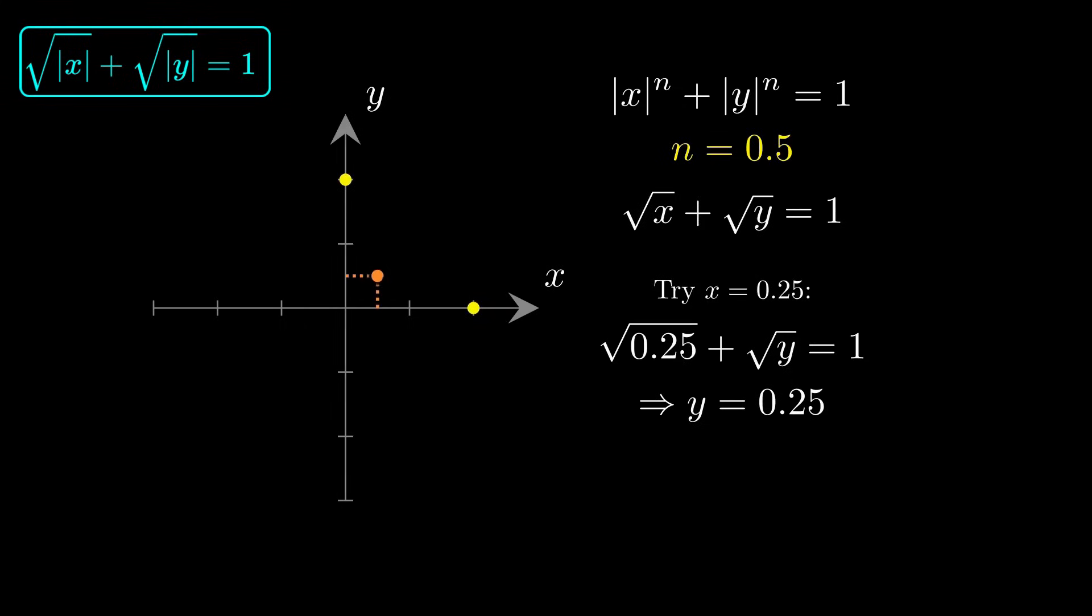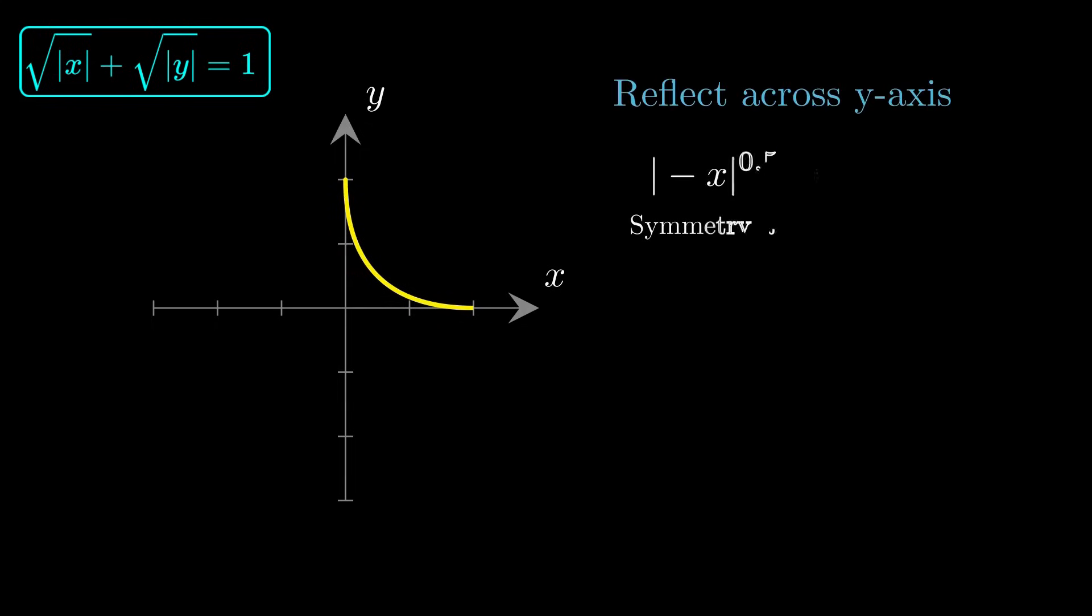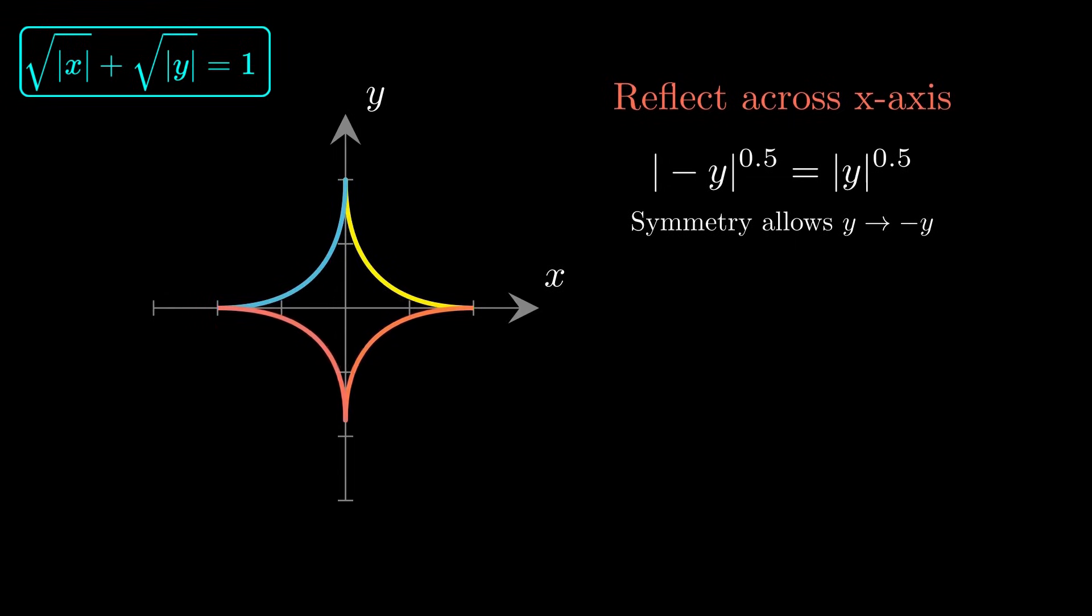Because the exponent is less than 1, the curve bends inward, forming concave edges and sharp tips. Reflect it across the y-axis. Nothing changes, because the absolute value of negative x is the same as positive x. Now reflect it across the x-axis. The full shape appears. With n below 1, we get a dramatic 4-pointed star.